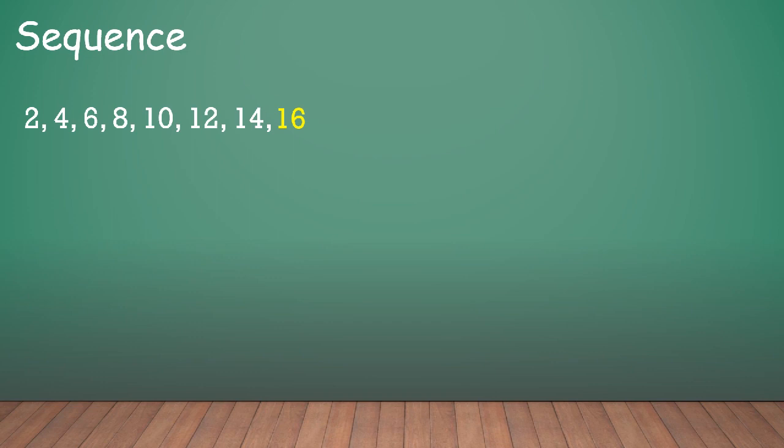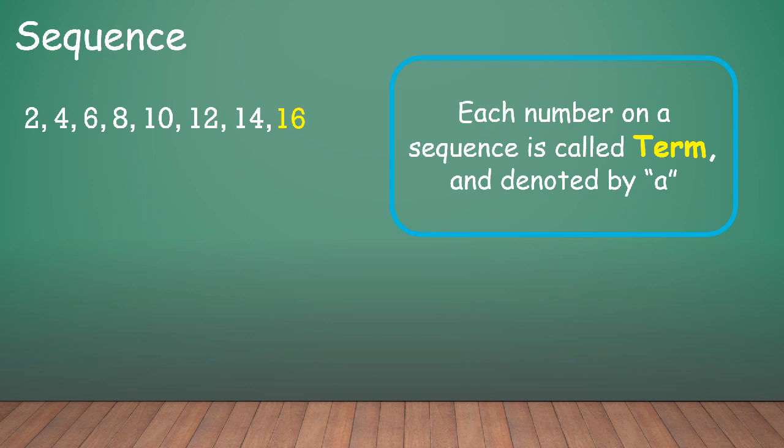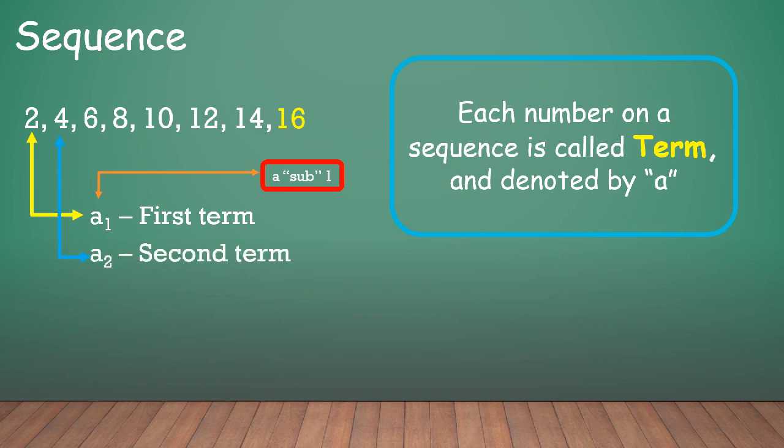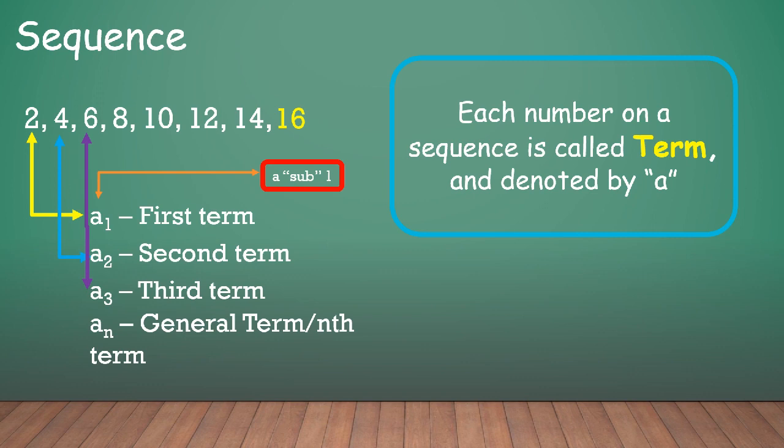So every number on your sequence is called a term. So therefore, 2 is a term, 4 is a term, 6 is a term, 8 is a term, and so on. So term is denoted by letter A. So for the first term, we're going to use A sub 1. So A sub 1 will be our first term. A sub 2 is the second term, and A sub 3 is the third term. We also have the A sub N which is called the general term or the N term. This can be any term. It will depend on the value of N. If N is 5, this will be 5th term. If N is 10, this will be the 10th term.